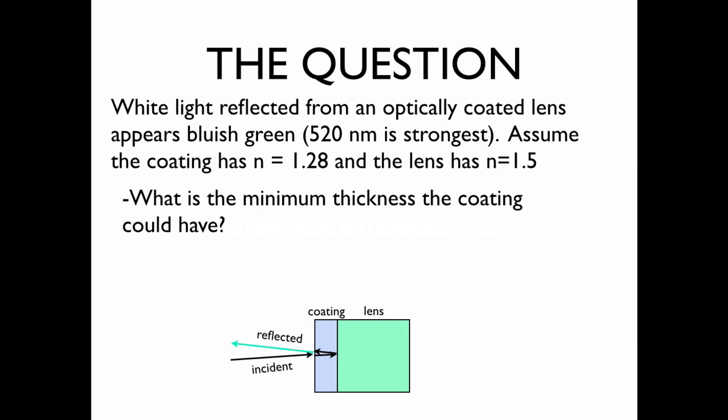The question. White light reflected from an optically coated lens appears bluish green. Assume the coating has an index of refraction of 1.28 and the lens has an index of refraction of 1.5. What is the minimum thickness the coating could have?